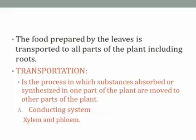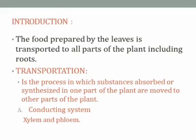The transportation of water and food in plants is carried out by a system called the conducting system. This conducting system consists of two main tissues: xylem and phloem. We have studied this in detail in seventh standard in the chapter on plant and animal tissues. This conducting system — xylem and phloem — is also called vascular bundles.